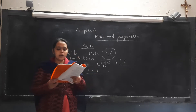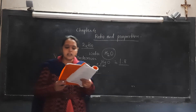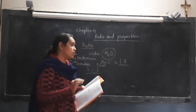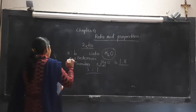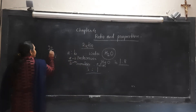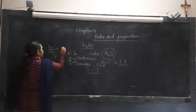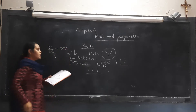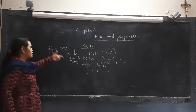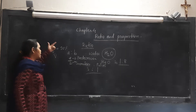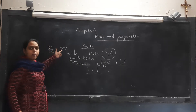In the ratio of two numbers, if the second term is 100, then it is known as percentage. For example, if any ratio is written as 90 upon 100, it means this is called 90 percent. So if in any ratio the successor is given as 100, we consider it as the percentage.